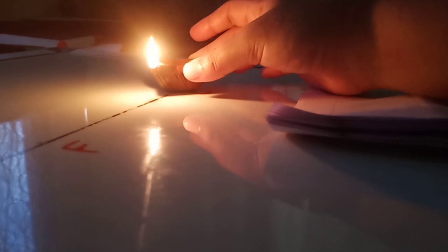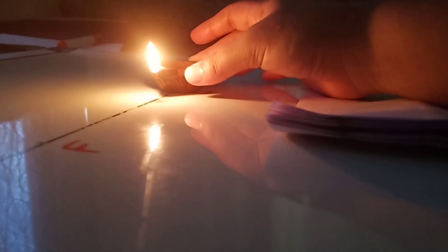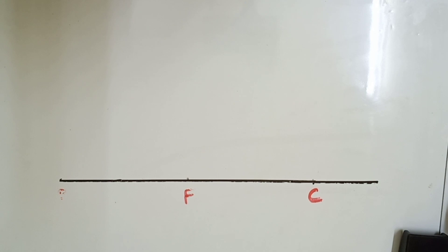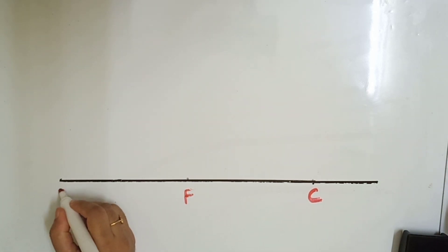Case three is where the object is kept at C. The same procedure is repeated using the screen. You can repeat the same process for the object at C and other positions.